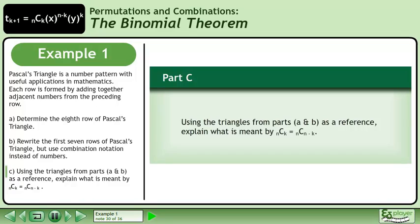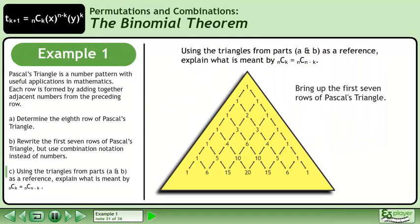Now we'll move on to Part C. Using the triangles from parts A and B as a reference, explain what is meant by n choose k equals n choose n minus k. Bring up the first seven rows of Pascal's triangle.